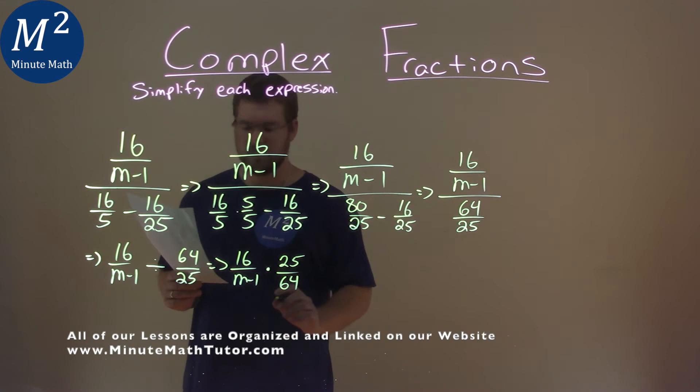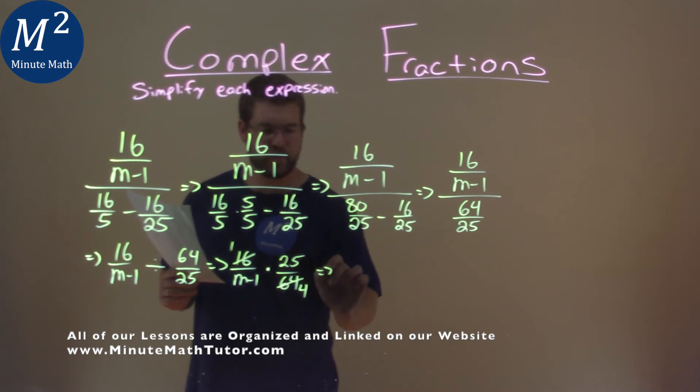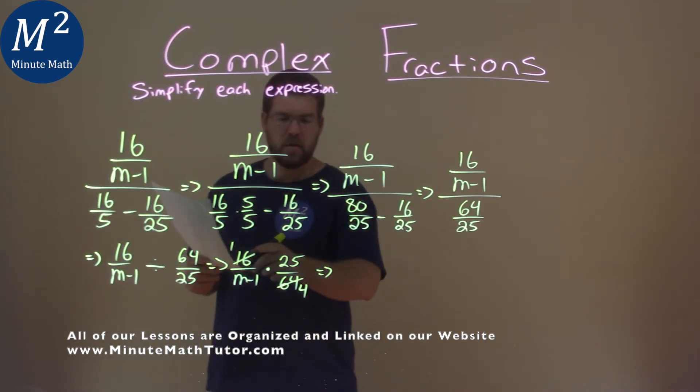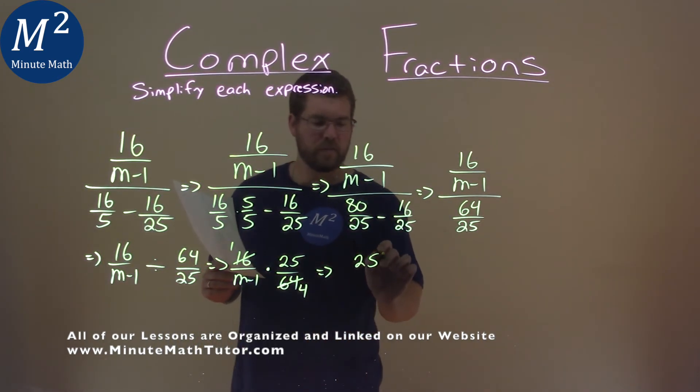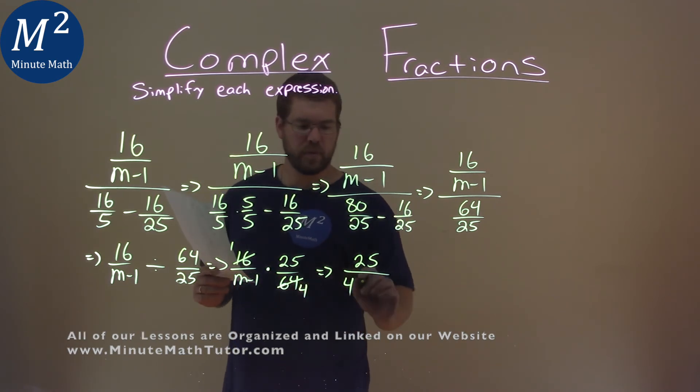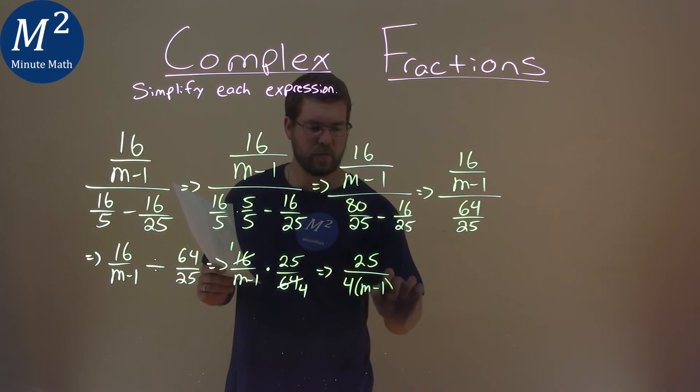Now, 16 goes into 64 four times, so that cancels out here. That becomes a 1, and this is a 4. So we multiply that out: 1 times 25 is 25, and 4 times m minus 1, we'll write it like this, 4 times m minus 1.